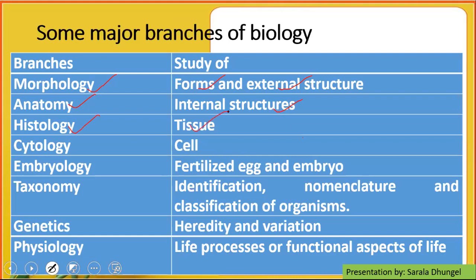Histology means the study of tissue. Cytology means the study of cells. Embryology means the study of a fertilized egg and embryo. Taxonomy means the identification, nomenclature, and classification of organisms — we will come back to taxonomy again and discuss it in this very class. And genetics — we are going to discuss about heredity and variations. Under physiology, we study about the different kinds of life processes: respiration, photosynthesis, and all the different functional aspects of life.